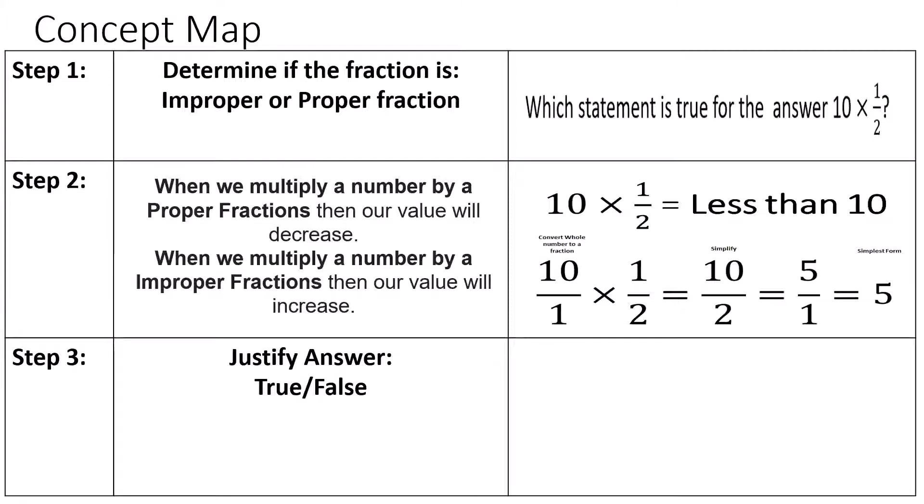This gives us 10 over 2 and when we simplify 10 over 2 we're left with 5 over 1. Whenever we have a 1 in our denominator we know that our fraction is equivalent to a whole number which is 5. 5 is our simplest form.